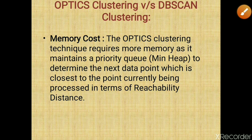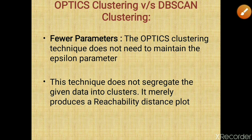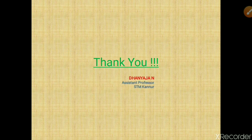Now comparing OPTICS clustering versus DBSCAN: first, memory cost — OPTICS requires more memory as it maintains a priority queue to determine the next data point closest to the point currently being processed. Second, fewer parameters — OPTICS does not need to maintain the epsilon parameter; it only maintains core distance and reachability distance. Third, OPTICS does not segregate data directly into clusters; it merely produces a reachability distance plot. That is the difference between OPTICS and DBSCAN. Thank you.